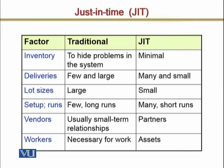For example, in the American automobile industry, switching from one model to another takes almost eight hours. During those eight hours the line is shut down. That shutdown cost is then distributed over a large number of cars produced, which is why they produce in large quantities.